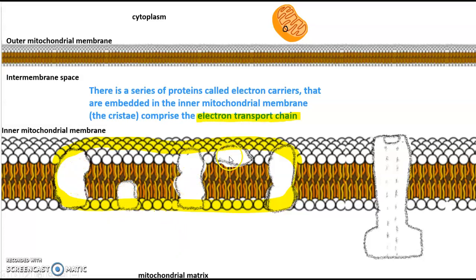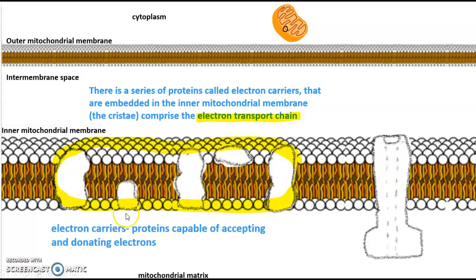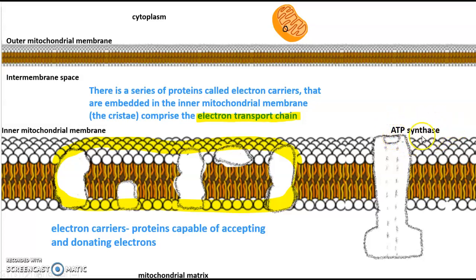These electron carrier proteins, indicated here as white blobs embedded in the phospholipid bilayer, comprise the electron transport chain. They are capable of accepting and donating electrons. There's one more protein embedded in the inner mitochondrial membrane called ATP synthase. The -ase ending tells you it's an enzyme, and the name ATP synthase tells you it's involved with ATP synthesis.